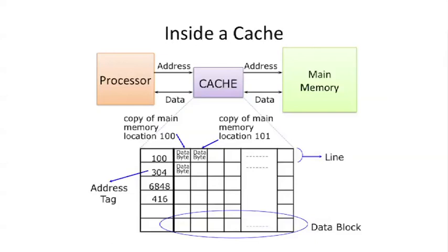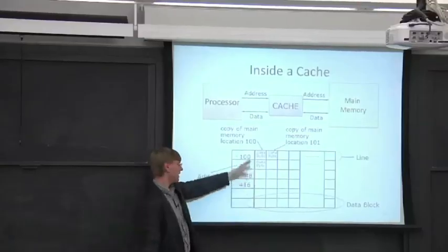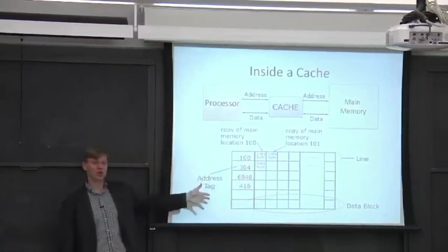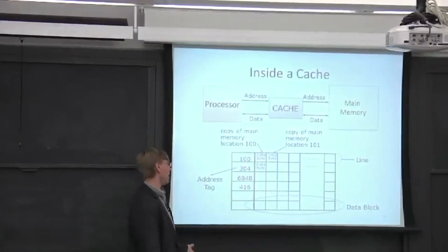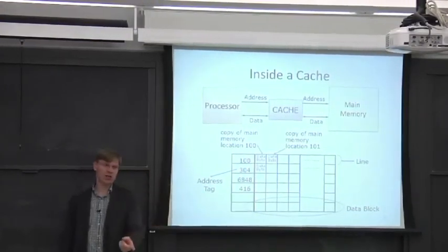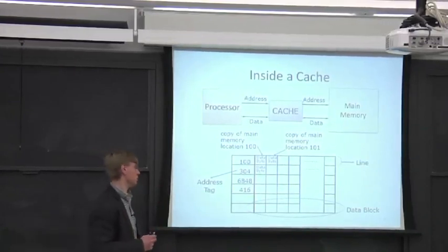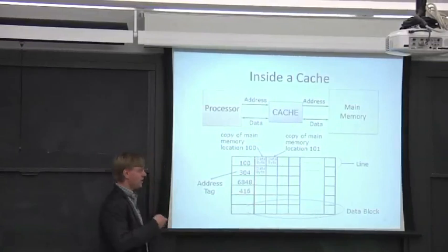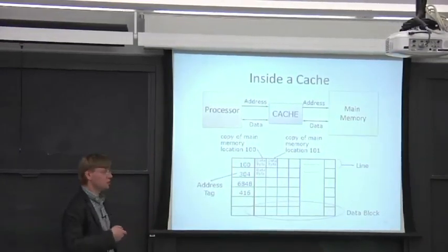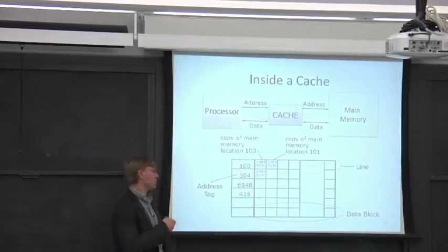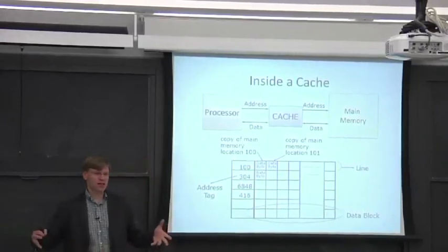Inside the cache, we store an address tag — not necessarily the full address, but enough bits to differentiate different things stored at the same location. In a fully associative cache you'd store the whole address; in a direct-mapped cache you only store a subset of bits. A cache line typically includes the tag information and valid bits, while the block is the actual data being stored.